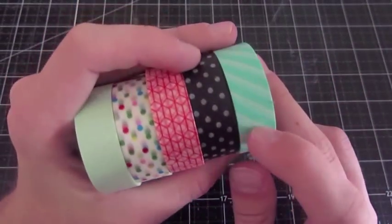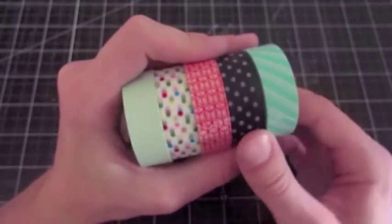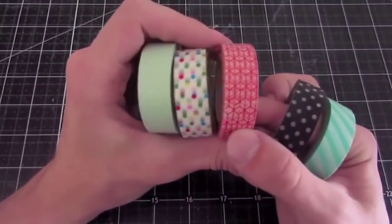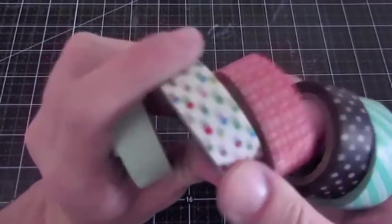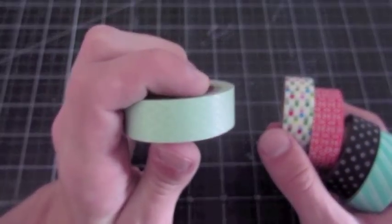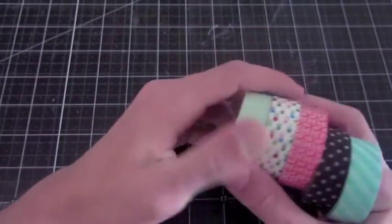I have this really fun diagonal teal pattern, a white on black polka dot, this red geometric pattern, this rainbow confetti as I call it, and this is a mint green chevron. I'm not sure if you can see the chevron in there, but there actually is a chevron.